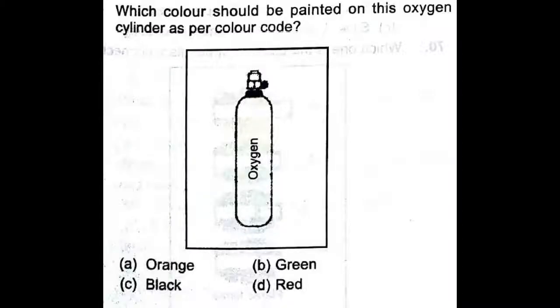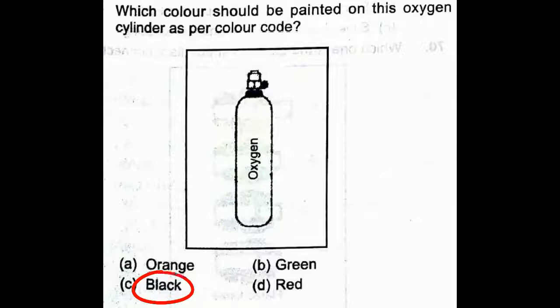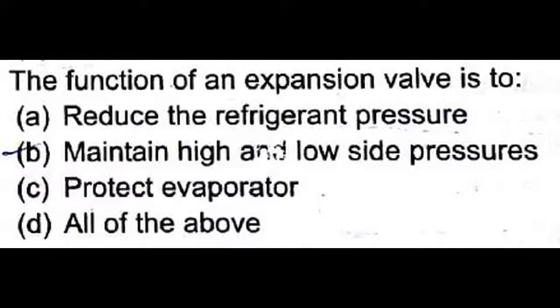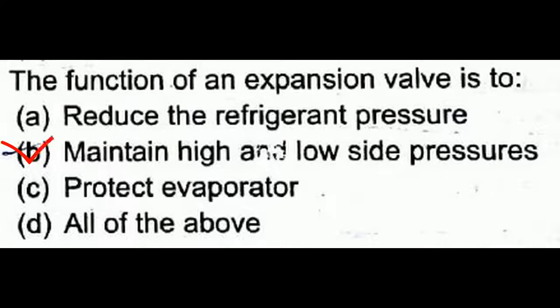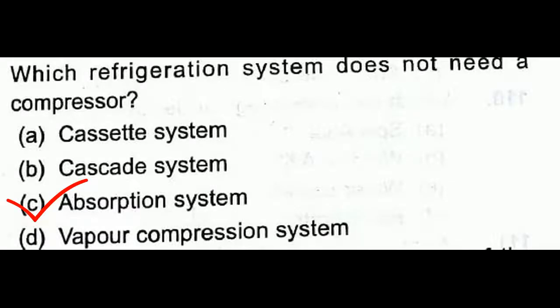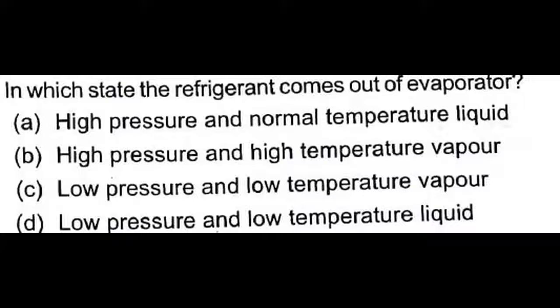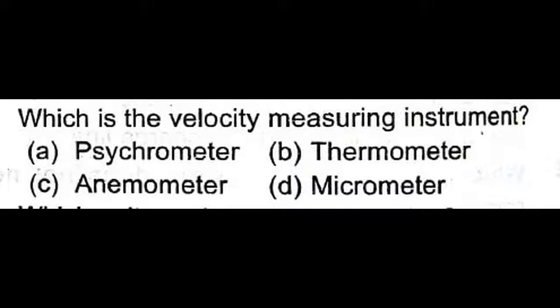Copper and brass are malleable and ductile — you can press or tension them. The oxygen cylinder is always painted black as per color code — option C is correct. The function of an expansion valve is to maintain the high and low pressure sides — option B is correct. An absorption system is the refrigeration system that does not need a compressor. In the evaporator, refrigerant comes out in vapor state at low pressure and low temperature.